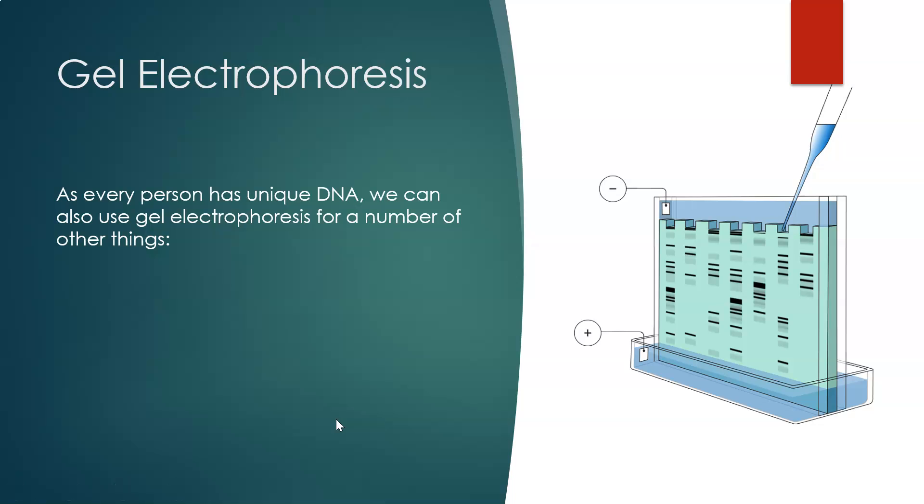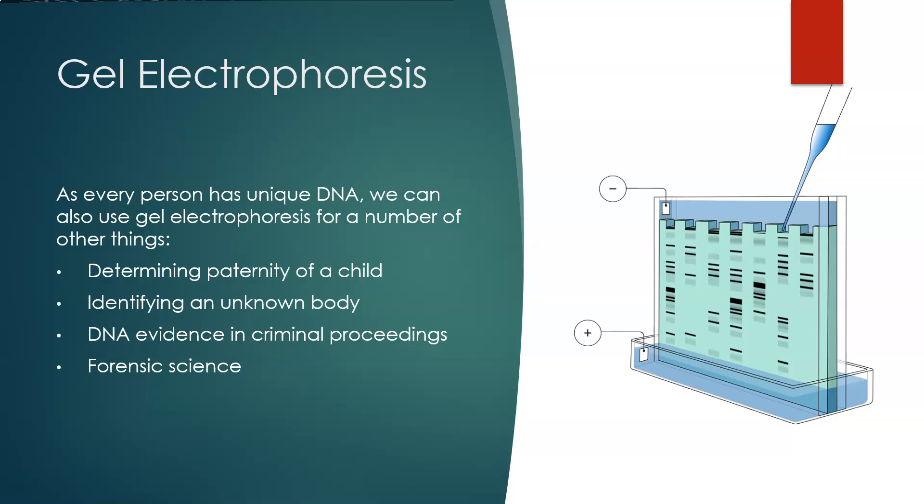As every person has unique DNA, we can also use gel electrophoresis for a number of other things: determining the paternity of a child, so seeing who the father actually is, identifying an unknown body, DNA evidence in criminal proceedings, and used ever so much in forensic science.